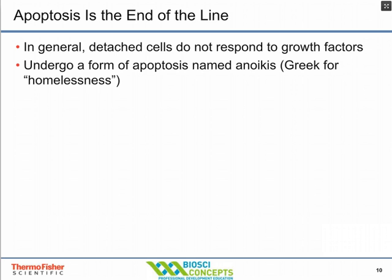Apoptosis — programmed cell death — is a very critical part of cell growth. Generally, when cells fail to attach in the right location, they undergo programmed cell death in response to loss of attachment or inappropriate attachment sites. From an in vivo perspective, this protects the organism from unwanted cell proliferation. In cell culture, loss of cell attachment signals can lead cells to die by apoptosis, reducing productivity. There is a special term for apoptosis induced by inappropriate external interactions: anoikis, which is the Greek word for homelessness.